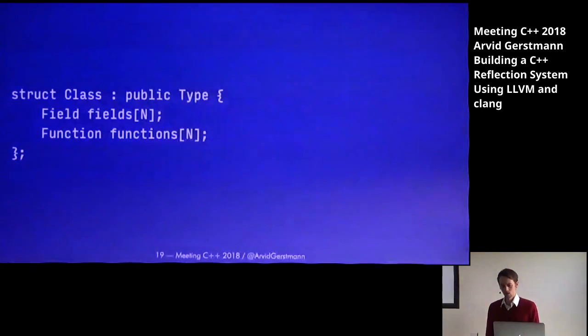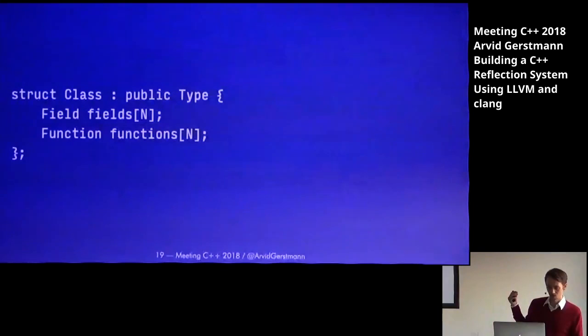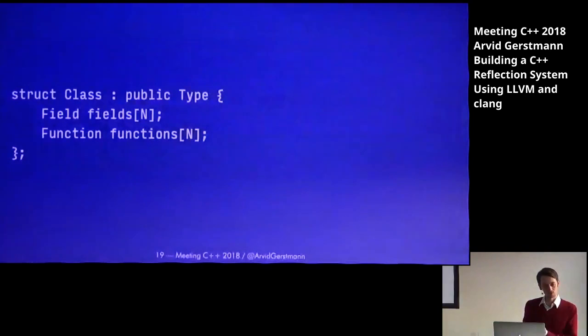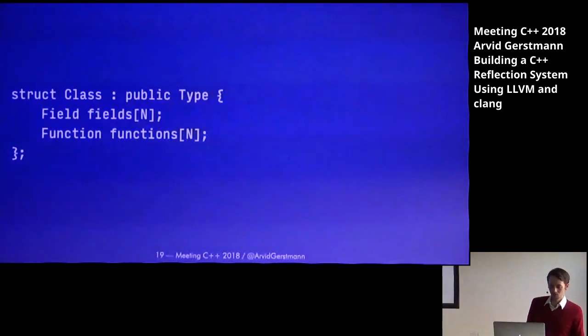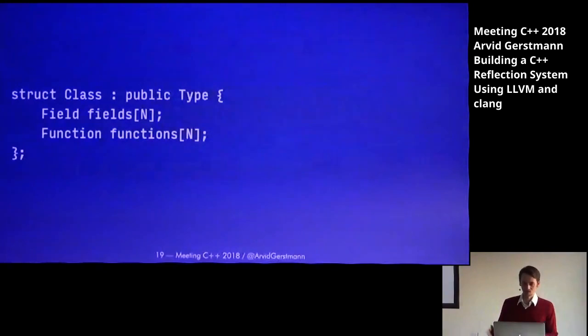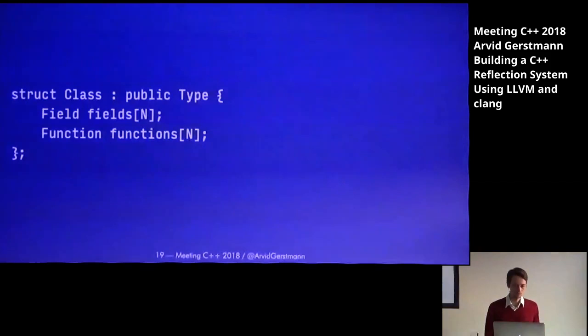Next we have class. With just type alone, we're not that useful. A class is a type, so we inherit from it, and we add some more properties. Each class has fields, so we add an array of fields, and functions, so we add an array of functions. There's one piece missing which I've omitted — and that is constructors. Constructors are fundamentally different from functions in that, for example, you cannot take an address of a constructor, but you can take an address of a function. For completeness we would have to add constructors, but I've omitted them for simplicity.